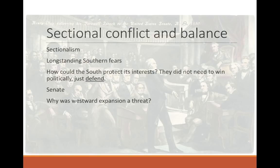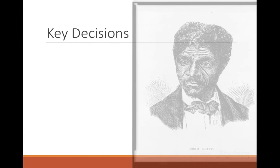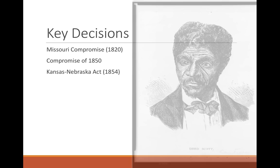Westward expansion is the threat, because as we expand west, we add territory, we eventually add states, and that can upset the Senate balance — and that's going to be an issue for 40 years. The key decisions in the 40 years leading up to the Civil War are the Missouri Compromise of 1820, the Compromise of 1850, the Kansas-Nebraska Act of 1854, and the Dred Scott Decision of 1857. The Missouri Compromise is going to be the most successful of these decisions — it will hold the truce for 30 years.